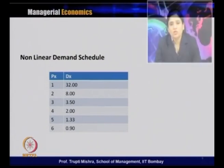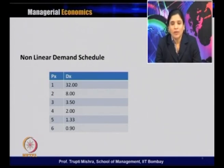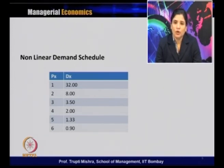This is an example of a non-linear demand schedule showing how demand changes with price. When price is 1, quantity demanded is 32; price is 2, quantity demanded is 8; price is 3, quantity demanded is 3.5. Similarly for prices 4, 5, and 6, quantity demanded keeps decreasing as price increases. The key point is not just to establish the inverse relationship between price and quantity, but to show that the change in quantity demanded at each price point is different — this is a typical feature of a non-linear demand curve.